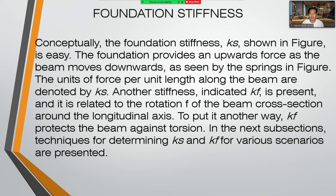The foundation stiffness: conceptually, the foundation stiffness KS shown in figure is straightforward. The foundation provides an upward force as the beam moves downward. As seen by the springs in the figure, the units of force per unit length along the beam are denoted by KS. Another stiffness indicated by the letter KF is present and is related to the rotation of the beam cross-section around the longitudinal axis — KF protects the beam against torsion. Techniques for determining KS and KF for various scenarios are presented in the next subsections.